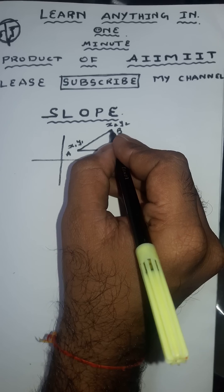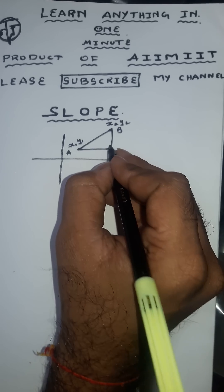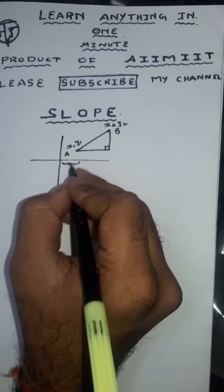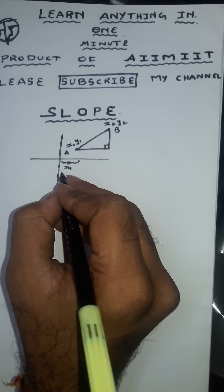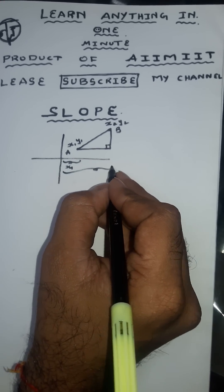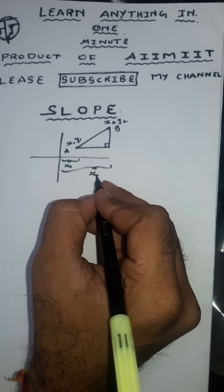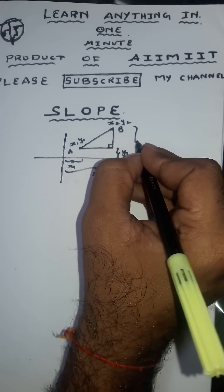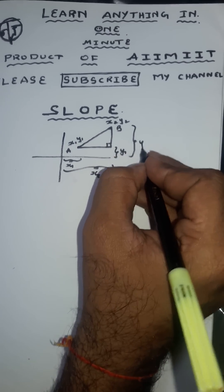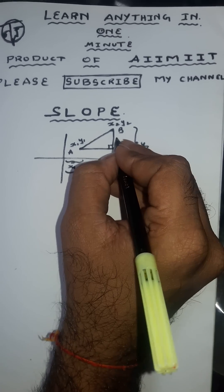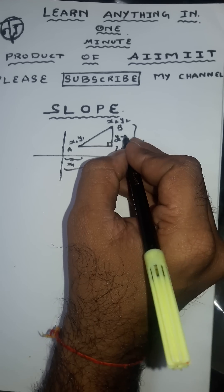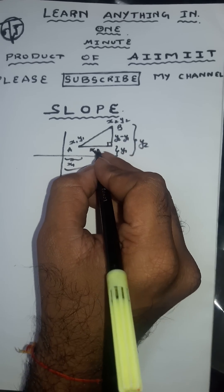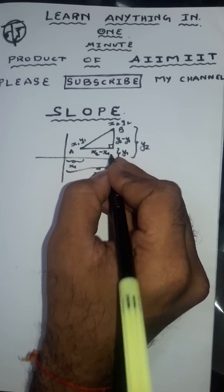Complete right angle triangle. This is x1. This is x2. This is y1. This is y2. This is y2 minus y1. This is x2 minus x1.